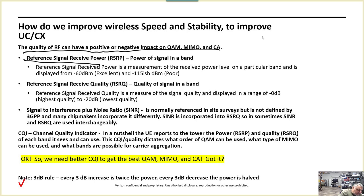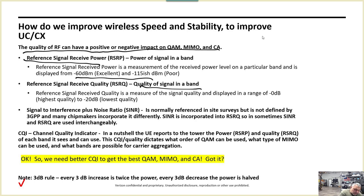RF quality is referenced in two items. First, Reference Signal Receive Power — RSRP — simply think of that as the transmit and receive power, measured in dBm. Good or excellent is around negative 60 dBm; bad is around negative 150 dBm. Negative 60 is excellent; negative 115 or lower is poor. Second, we have Reference Signal Received Quality — RSRQ — which is basically the quality of the band.